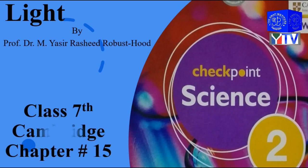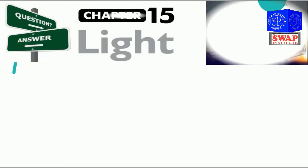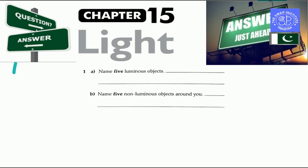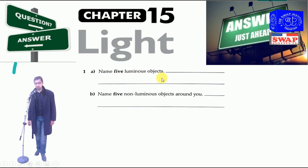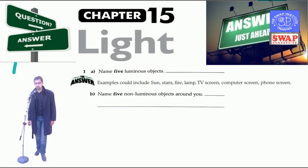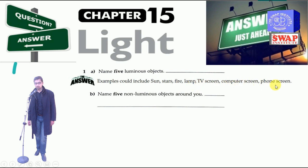Today our topic is light for Grade 7 Cambridge checkpoint science, chapter number 15. The first question: name five luminous objects. The answer could include the sun, stars, fire, lamp, TV screen, computer screen, phone screen, etc.